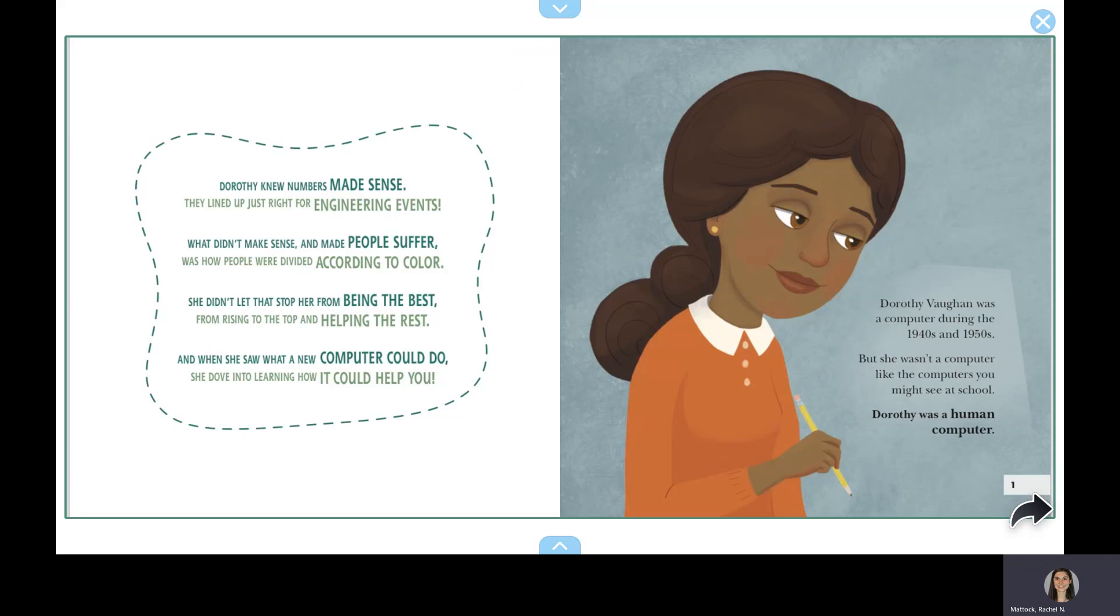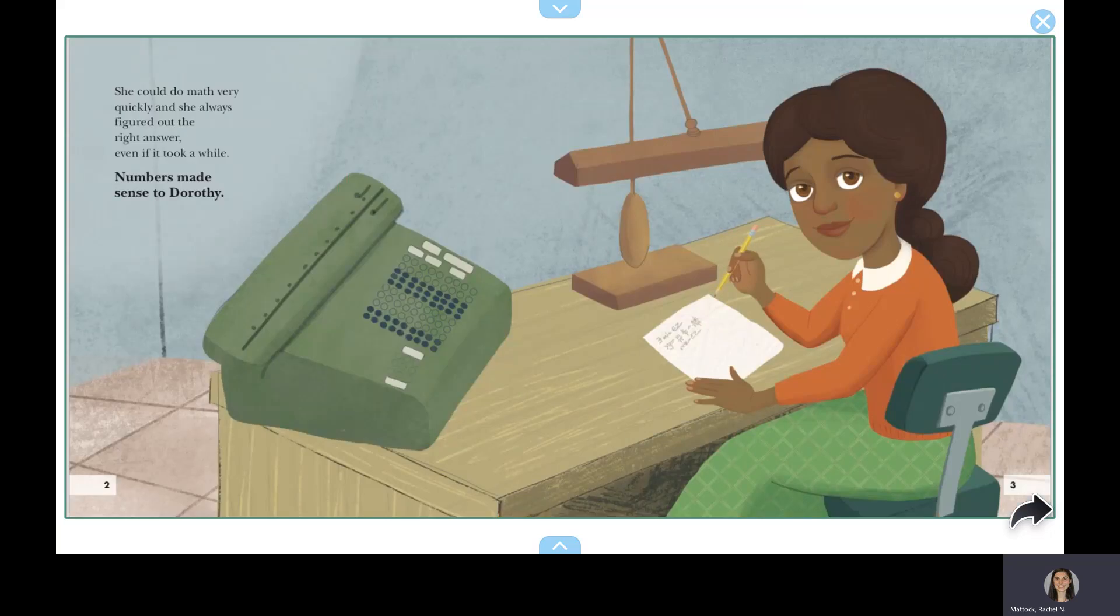Dorothy Vaughan was a computer during the 1940s and 1950s, but she wasn't a computer like the computers you might see at school. Dorothy was a human computer. She could do math very quickly and she always figured out the right answer, even if it took a while. Numbers made sense to Dorothy.